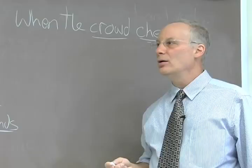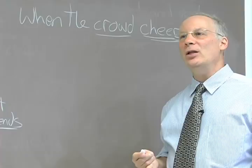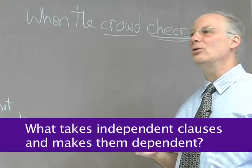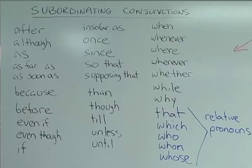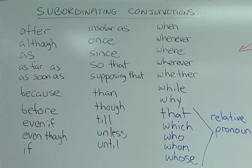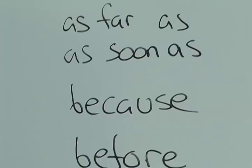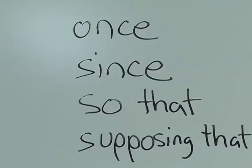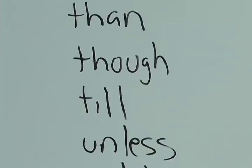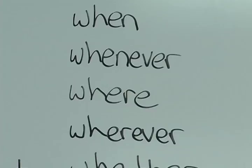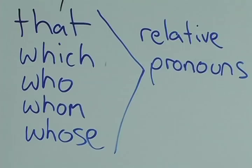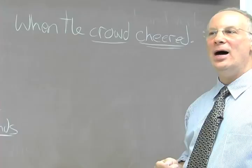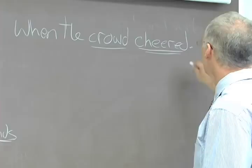There is a group of words that typically creates dependent clauses — that takes independent clauses and makes them dependent. We have them on the whiteboard over here. This group of words is called subordinating conjunctions and relative pronouns. What's significant about this group is that it will take an independent clause and make it dependent. Understanding clause structure is really critical to understanding how to punctuate sentences. You have to know what you have in order to understand what punctuation to utilize. 'When the crowd cheered' cannot take a period by itself because it's a dependent clause — it depends on another clause. To finish this, I would have to add an independent clause to it.